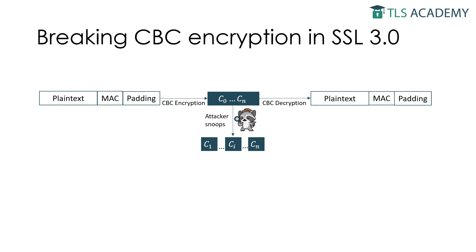Assume the attacker is actively eavesdropping on the network. The attacker can quickly modify one of the ciphertext blocks en route by replacing the final block Cn with any other block Ci. The last block should be filled completely with padding, and the MAC is in a previous block. This allows modifications in the last padding block without invalidating the MAC.